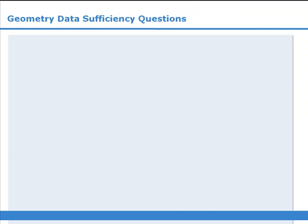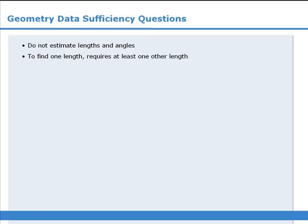In this lesson, we learned some tips for tackling data sufficiency questions involving geometric shapes. First, do not estimate lengths and angles. Second, to find one length, you must be given at least one other length. Third, sketch the diagram on your scrap paper and add information to it. And fourth, mentally grab points and lines on the diagram and try to move them without breaking any of the restrictions you have been given.